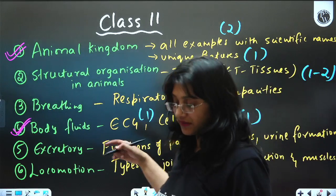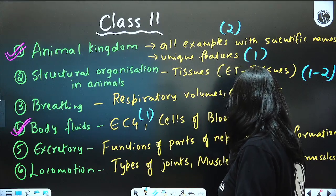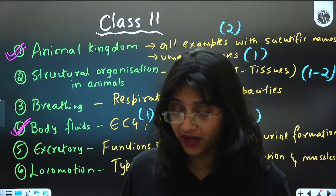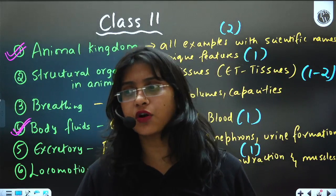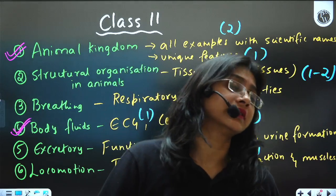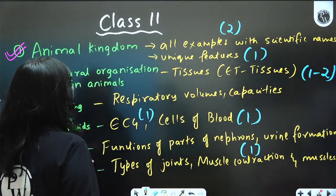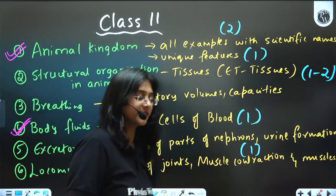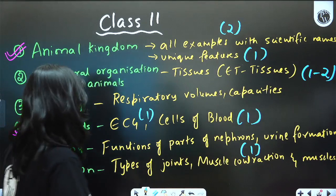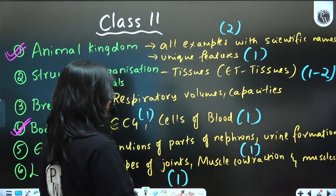From Excretory Products and their Elimination, from the different parts of the nephron, their functions, and urine formation — you can expect one combined question from these. Questions can also be expected from other organs of excretion and types of nitrogenous waste. For sure one question will be asked from these topics.